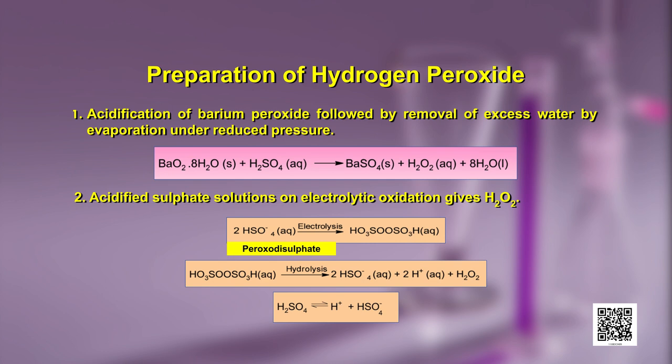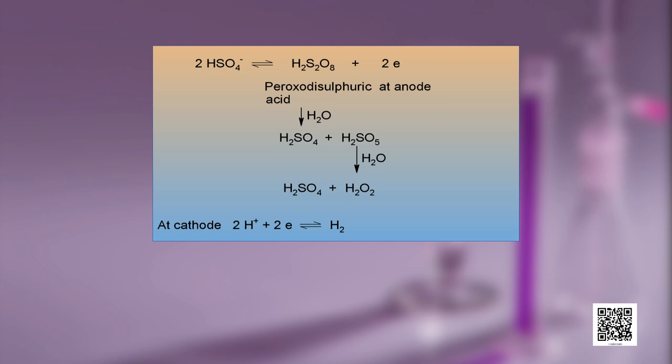The detailed reaction is: H₂SO₄ is in equilibrium with H⁺ ions and HSO₄⁻ ions. These HSO₄⁻ ions further dissociate in an equilibrium reaction to give H₂S₂O₈, which is peroxodisulfuric acid, plus 2 electrons at the anode. This peroxodisulfuric acid gets hydrolyzed to give sulfuric acid and H₂SO₅, which further reacts with water to give H₂SO₄ and hydrogen peroxide. At the cathode, 2 H⁺ ions plus 2 electrons give dihydrogen.